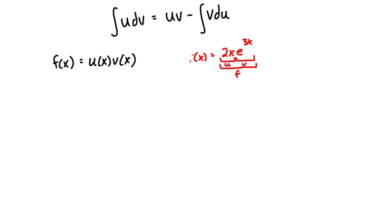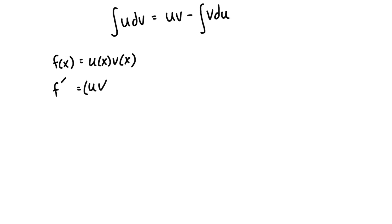Let's drop the x's to make it easier to follow. So we have f = uv. If we take the derivative of f, that's the same as taking the derivative of both sides. The derivative of uv — from the product rule in calculus 1 — equals u' times v plus u times v'.